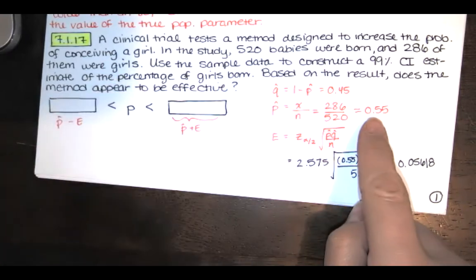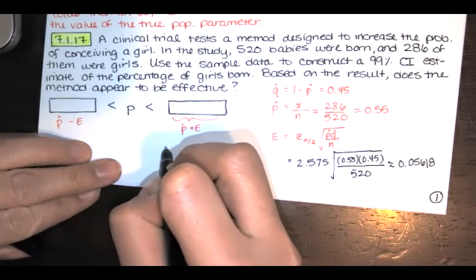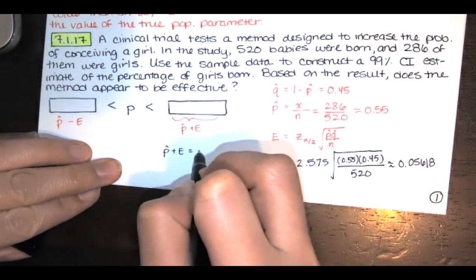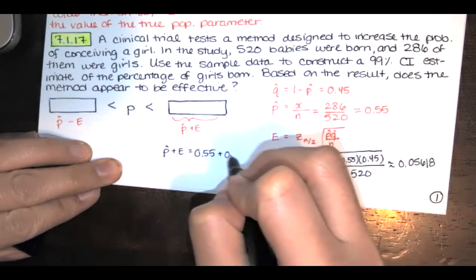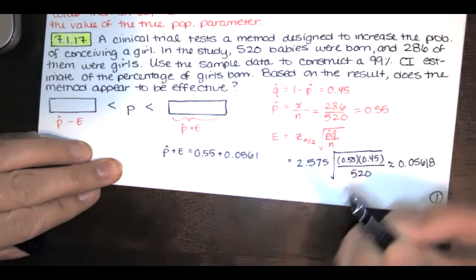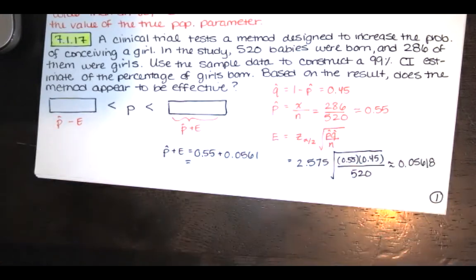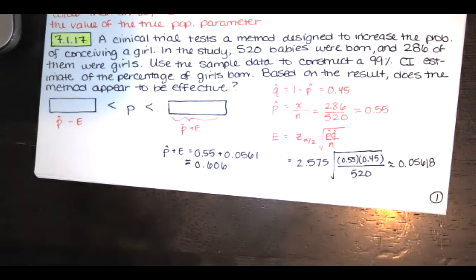So if I take this and I add that error, I get approximately 0.606. And I believe they said to round to three decimal places.